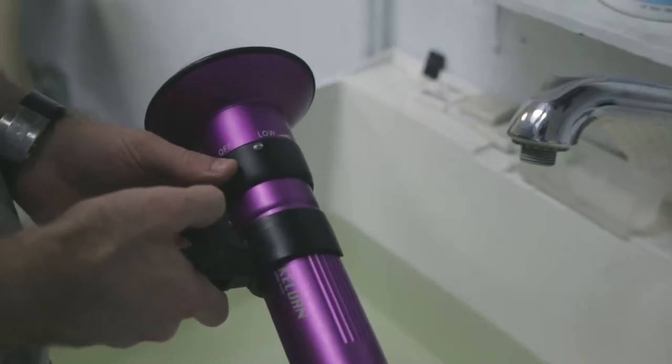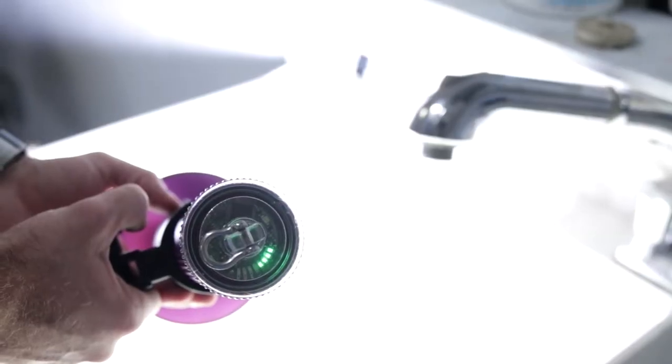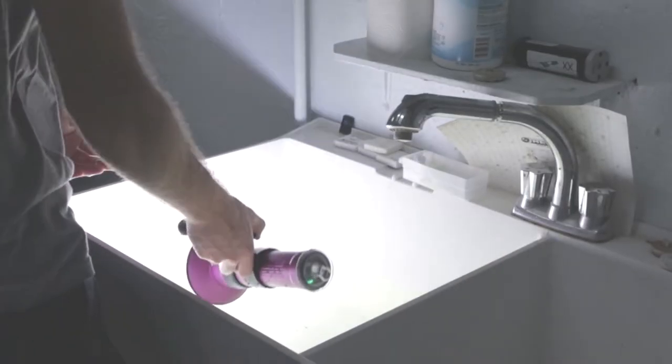You'll first want to assemble your Keldin light, turn it on to full power, and place it into a sink or bucket filled with water.